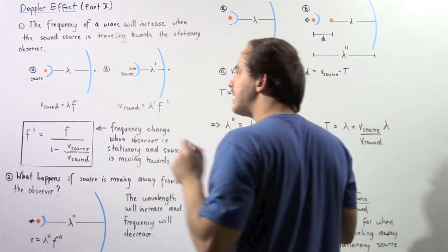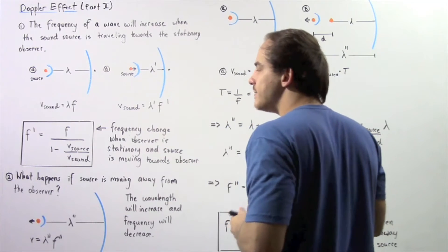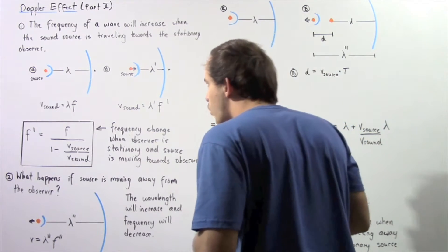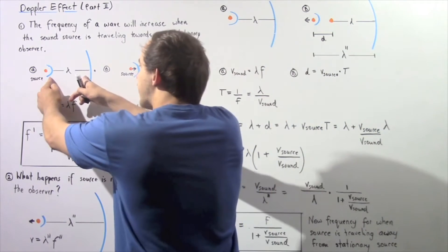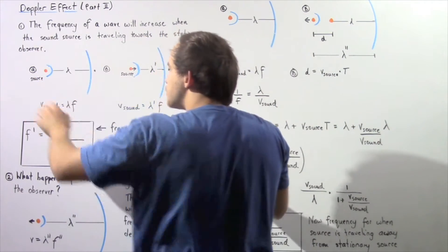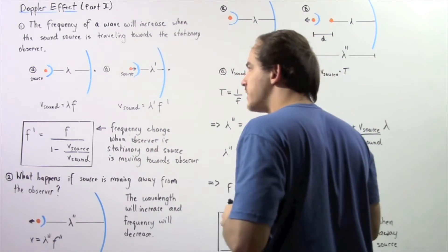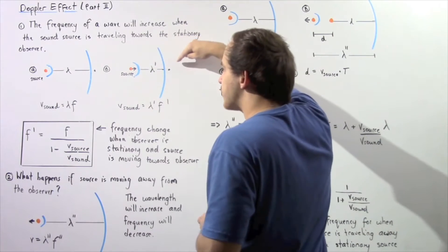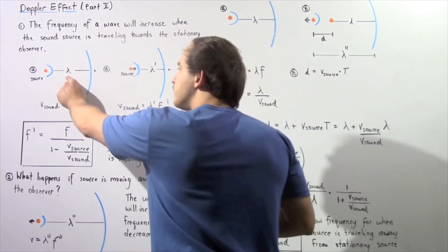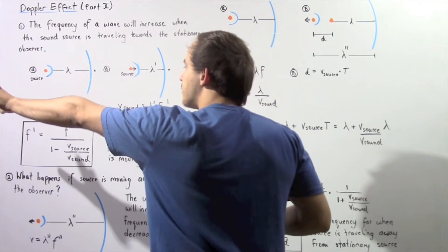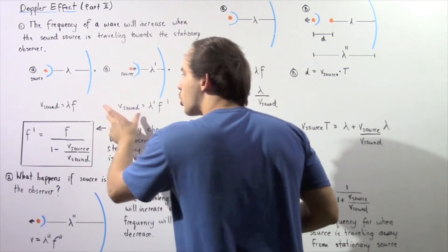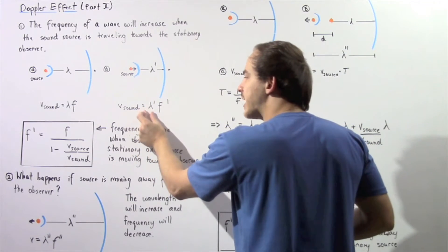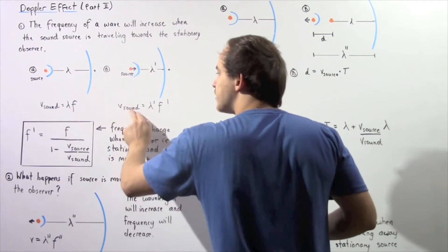In case A, the velocity of the sound is the same as in case B, because the velocity of mechanical waves depends on the type of medium through which the wave is propagating. Also, the wavelength lambda for the stationary case is different from the wavelength in the moving case. When the source moves toward the observer, lambda prime is less than lambda, so the frequency must be greater to compensate, since V sound remains the same.